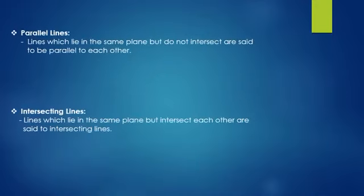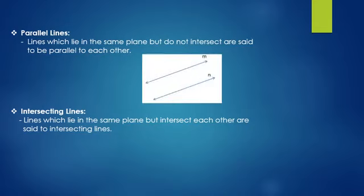Parallel lines. Lines which lie in the same plane but do not intersect are said to be parallel to each other. In the figure given below, line M and line N are parallel to each other. Even if we extend the lines, they will do not intersect each other. Such lines are said to be parallel lines.